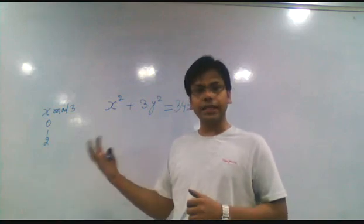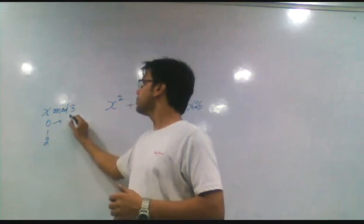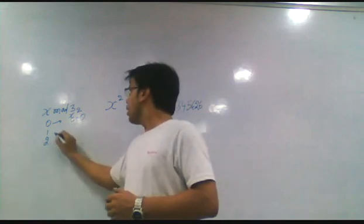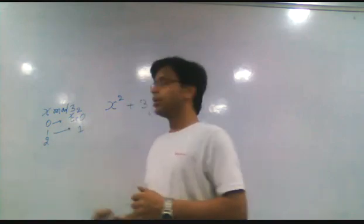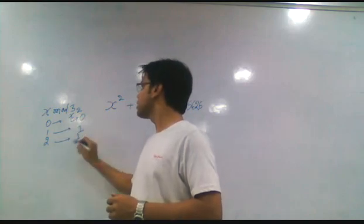So what would be the value of x² divided by 3? If x divided by 3 gives 0, then x² gives 0. For 1, this is 1. For 2, x² becomes 4, so the remainder is 1.